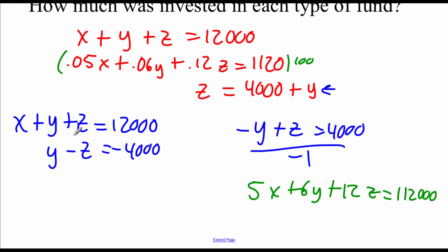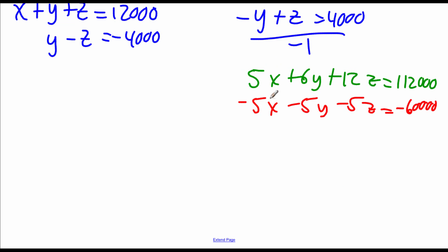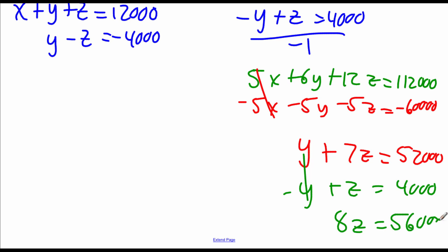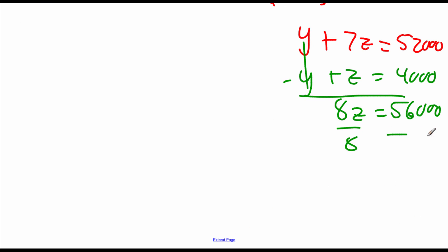We need to get rid of those five x's. I'll take the top equation and multiply by negative 5, giving negative 5x minus 5y minus 5z equals negative 60,000. Adding those equations together, the x's cancel and we get y plus 7z equals 52,000. We need to get rid of that y, so I'll use the second equation y minus z equals negative 4,000 and multiply by negative 1, giving negative y plus z equals 4,000. Adding those up, the y's cancel. We get 8z equals 56,000. Dividing both sides by 8, we get z equals 7,000.